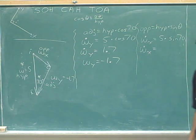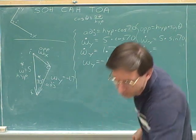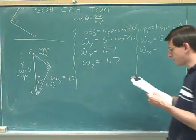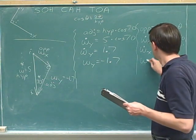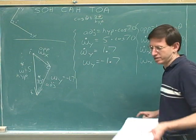5 times the sine of 70, that's 4.7. In magnitude, now we have to find the sign components.